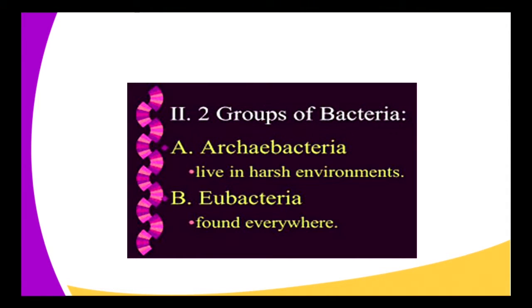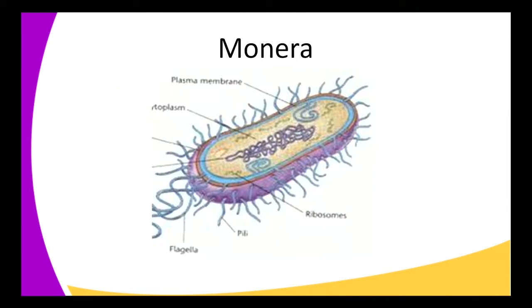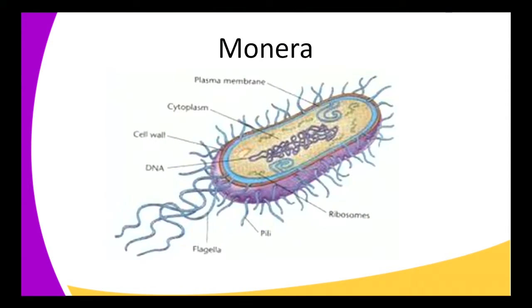We have two types of bacteria as examples of the Monera kingdom. We have the archaebacteria — these are bacteria which live in very harsh environments, as we will see. Then there are the eubacteria, which are found everywhere in all types of habitats and ecosystems.